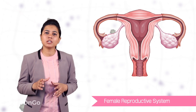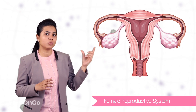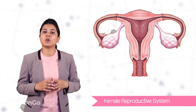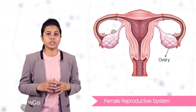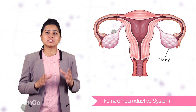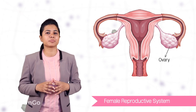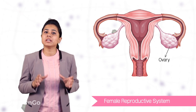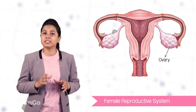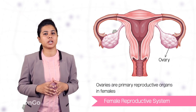The main constituent of this system are these two oval-shaped organs which are called as ovaries and are placed inside the abdominal cavity of a woman near the kidney. A woman has two ovaries and these are the primary female reproductive organs.